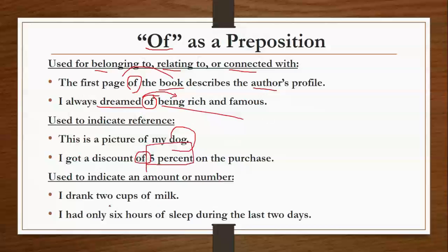Use to indicate an amount or number. 'I drank two cups of milk' — यह एक number है, इसलिए हमने 'of' का use किया है। 'I had only six hours of sleep during the last two days' — यह भी एक number के under आता है, इसलिए हमने यहाँ 'of' का use किया है।